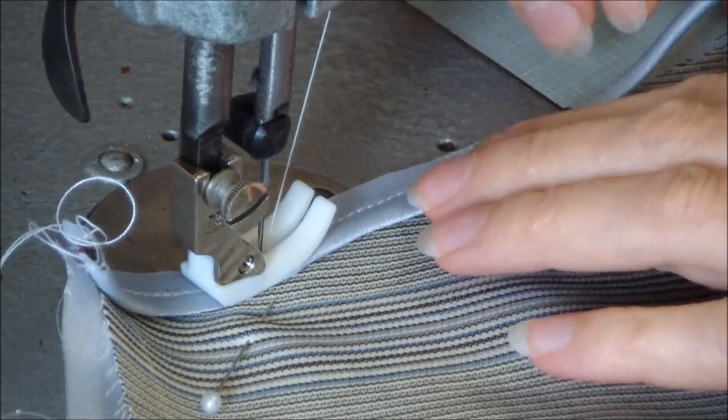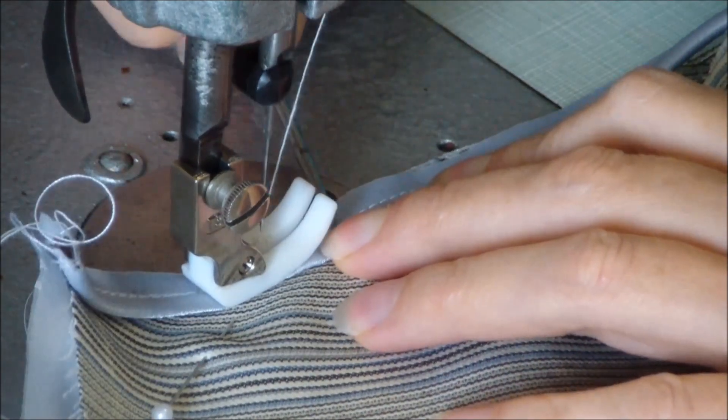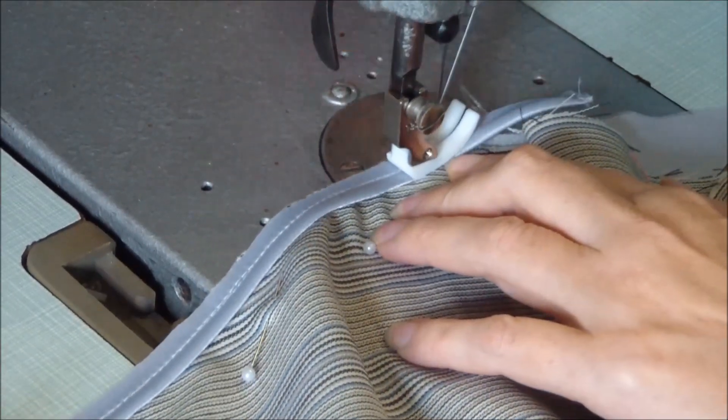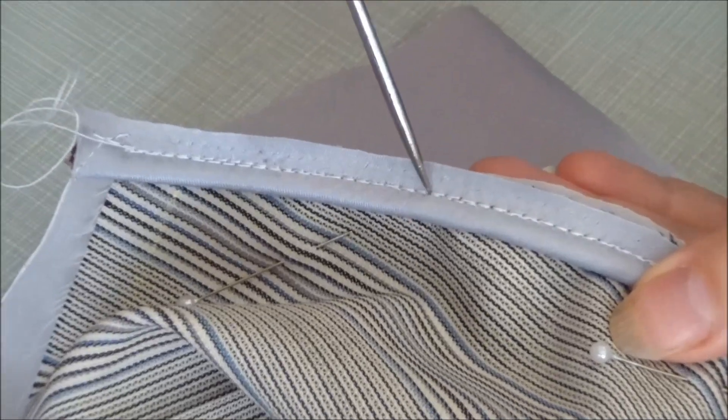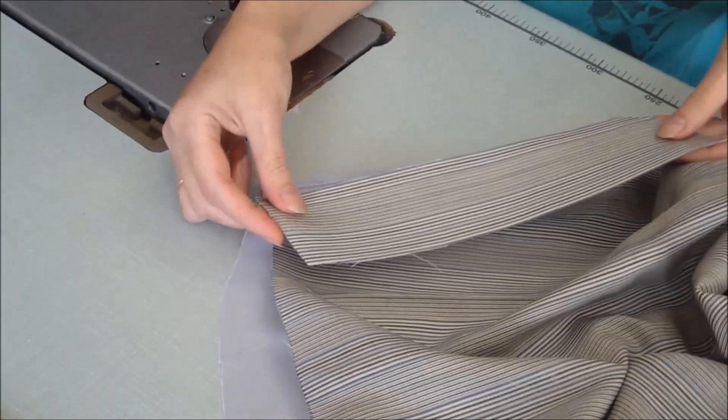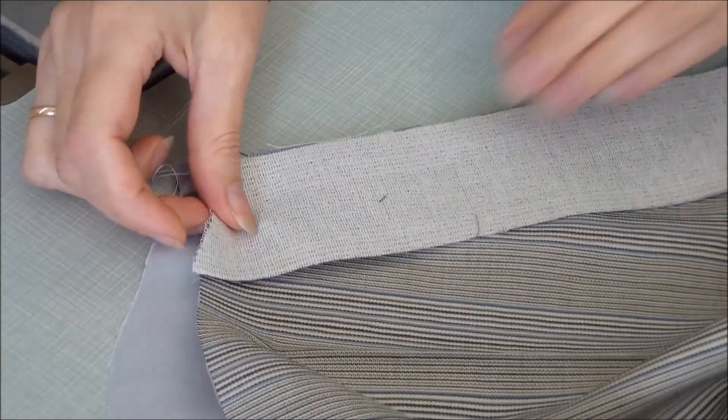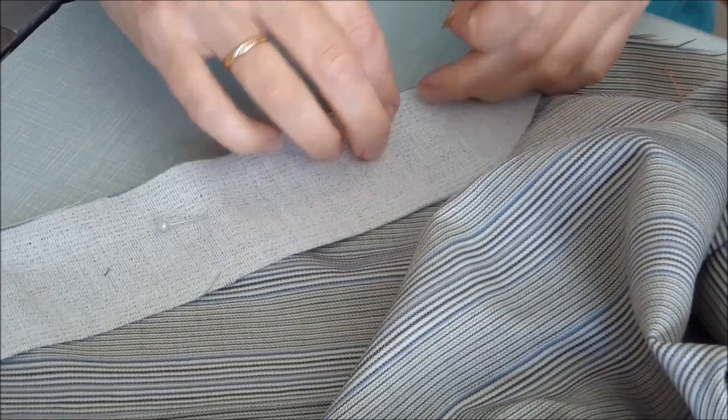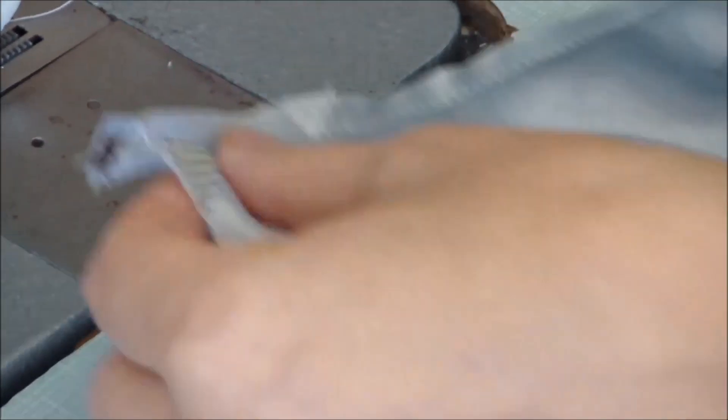The piping must be sewn to the pocket exactly along stitching line of the piping. Now you need to attach this strip to the pocket. It must be stitched along the lining fabric.